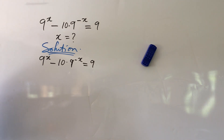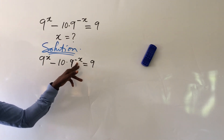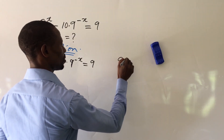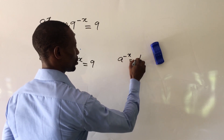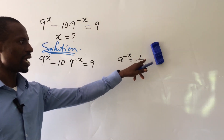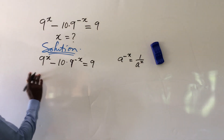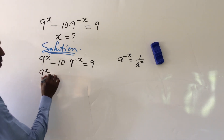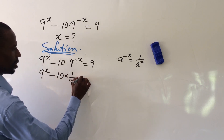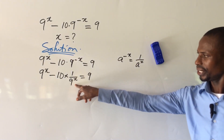The first thing we're going to do is eliminate this negative exponent. According to the law of indices, a to the power of minus x is the same as 1 over a to the power of x — the division sign takes the place of the negative. So we rewrite this to get 9 to the power of x minus 10 times 1 over 9 to the power of x, equal to 9.